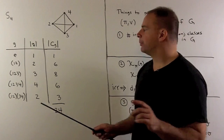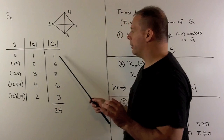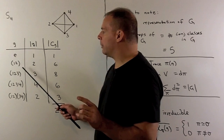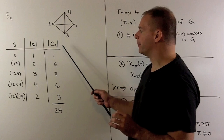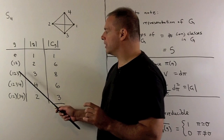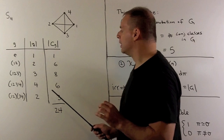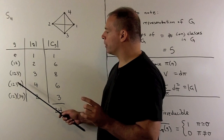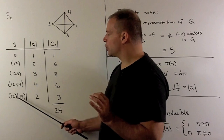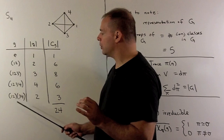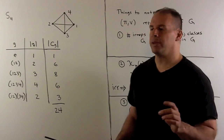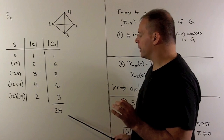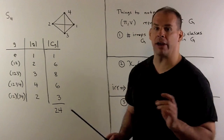For the identity element, we have one element in this conjugacy class. For two-cycles, we have four times three divided by two ways to write that element, giving us six elements. For three-cycles, we have four times three times two divided by three, giving us eight elements. For four-cycles, four factorial divided by four gives us six. For disjoint two-cycles, four factorial divided by two, divided by two, divided by another two gives us three elements. Adding up, we get 24 elements, which agrees with the combinatorics for a regular tetrahedron.